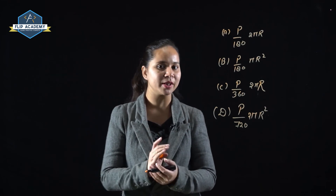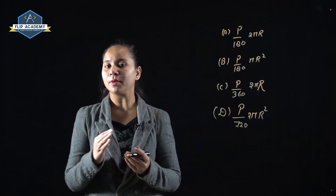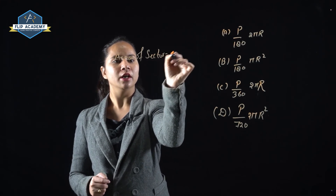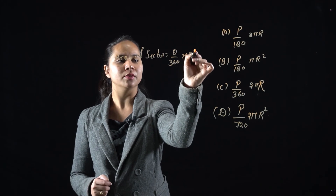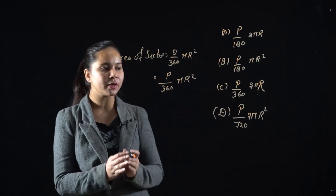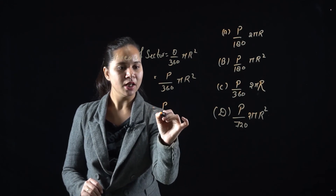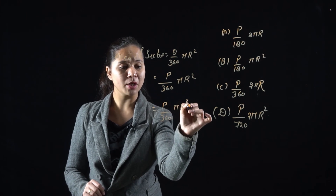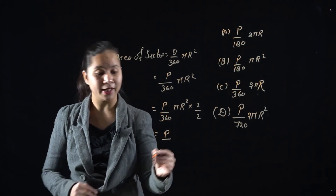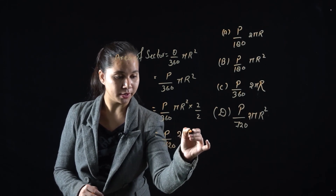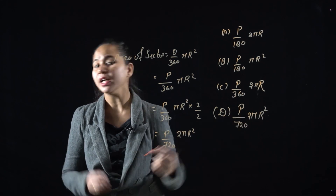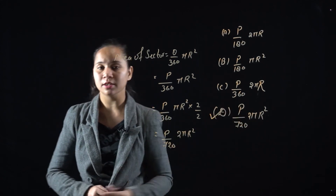The angle at the center is P degrees. Area of sector = θ/360 × πR². So area of sector = P/360 × πR². To match this with the given options, multiply and divide by 2: we get P/720 × 2πR². Comparing with the options, this matches Option D: P/720 × 2πR². So Option D is the correct answer.